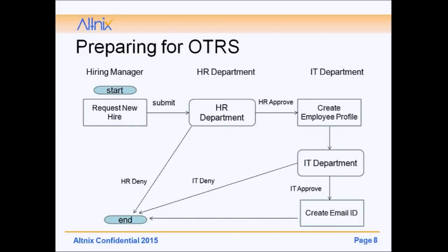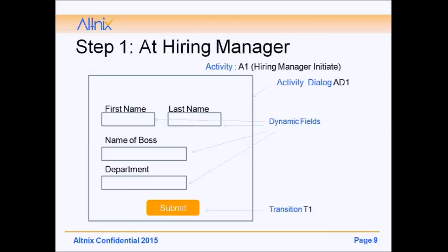While preparing, we identify that the hiring manager requests a new hire and submits. It goes to HR, which can do HR approve or HR deny. On HR approve, you create the employee profile and it goes to IT. IT can do IT approve or IT deny. On IT approve, you create an email ID — that is the end of the successful process.